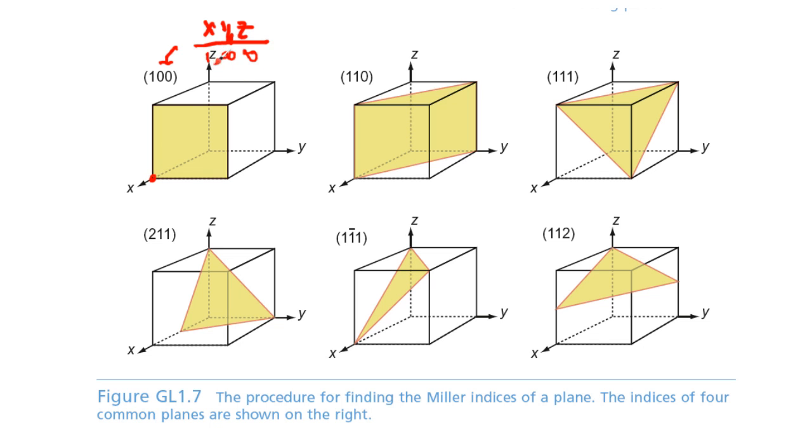Now we take these and we flip them upside down to get the Miller indices. So if I invert all these values, 1 over infinity, I get 0. Same thing, I get 0. This one, 1 over 1, is 1. So the Miller indices for this plane are 1, 0, 0.